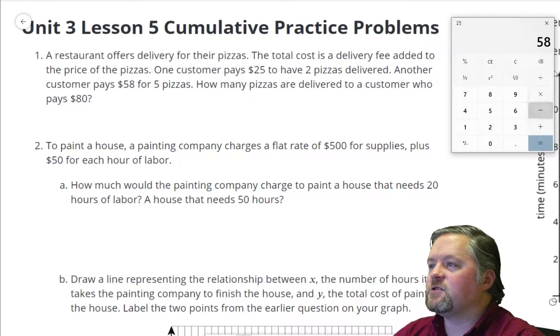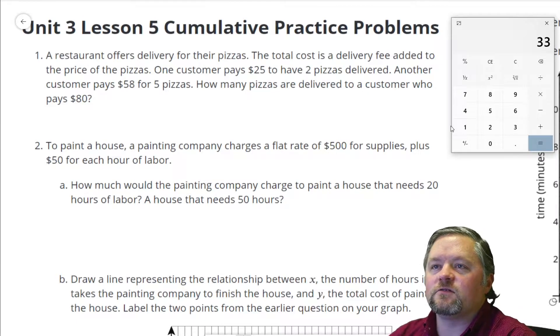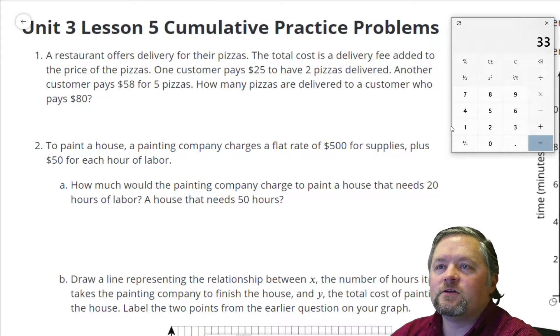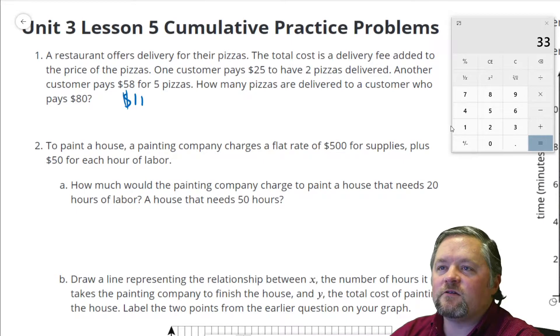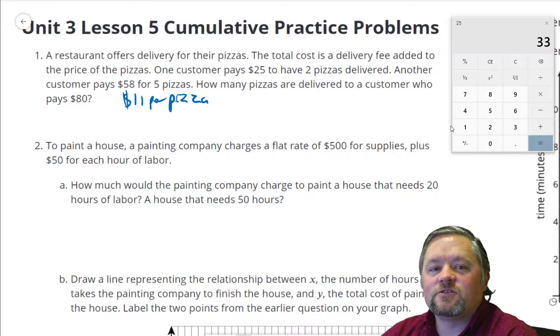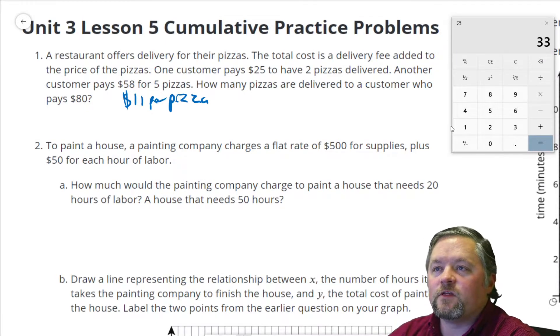What was the difference in price between those? $58 subtract $25 is $33. So we paid $33 more, and we got three pizzas more. So that seems to me like we pay $11 per pizza. That $11 a pizza will be our unit rate or our slope for this.